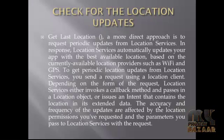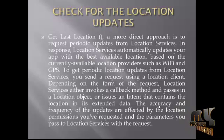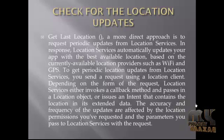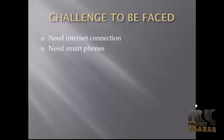The final module is for location updates. The 'get last location' method is used to direct approaches to request periodic updates from the location service. The location service automatically updates your app with the best available location based on the current provider, such as WiFi and GPS. You send the request using your location client, invoking the callback method with location object and frequency of updates, which are affected by the location permission and request parameters you pass to the location service.